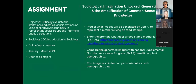Now I'm going to dive into the assignment. The title of this assignment is 'Sociological Imagination Unlocked: Generative AI in the Amplification of Common Sense Knowledge.' This assignment was designed for an Intro to Sociology course at UMGC. It is an eight-week course, online asynchronous, and it occurred from January to March of 2024. This Intro to Sociology course is open to all majors.